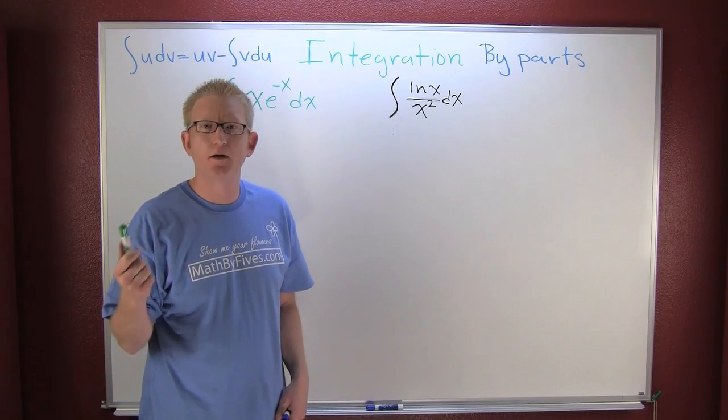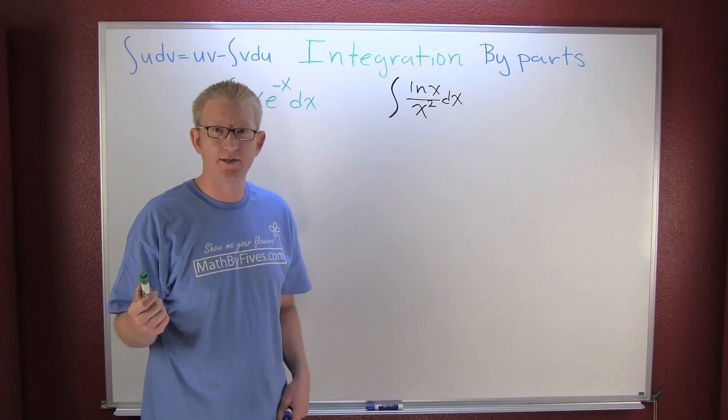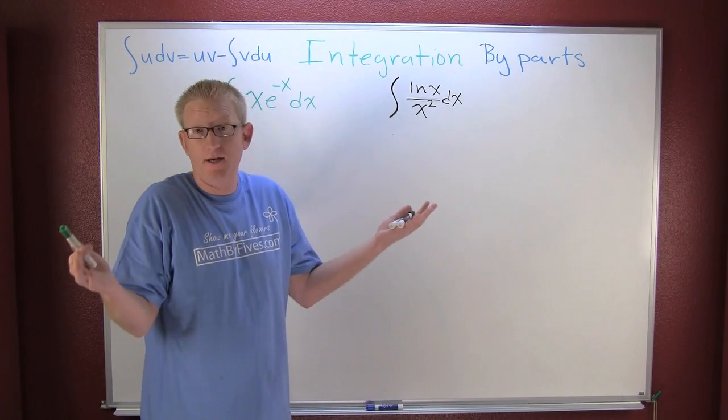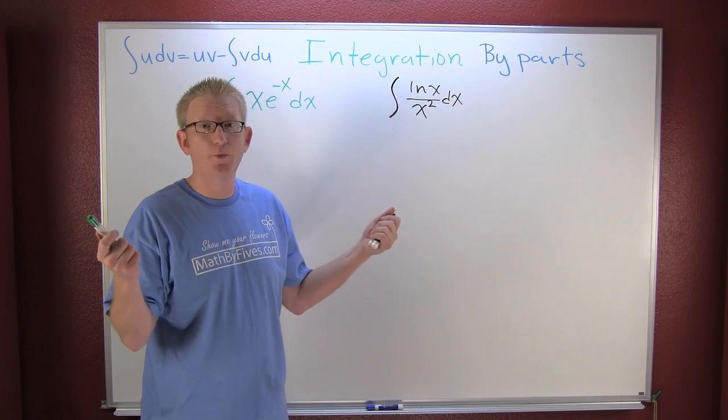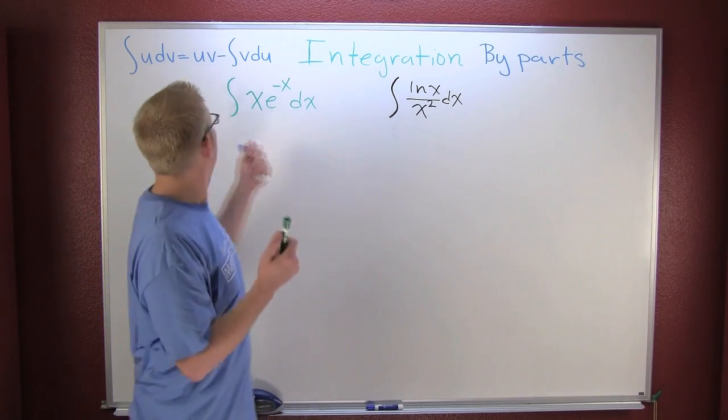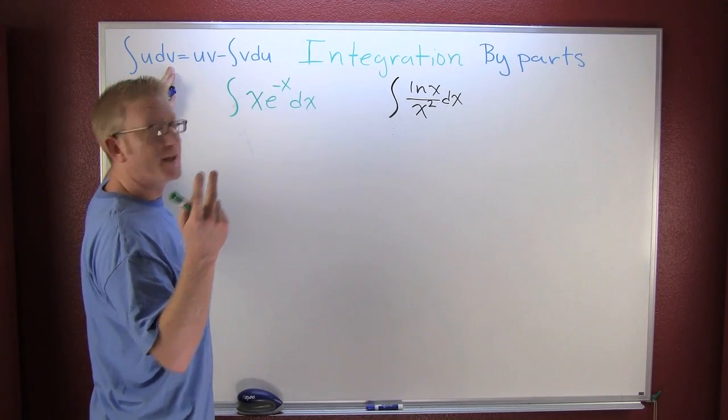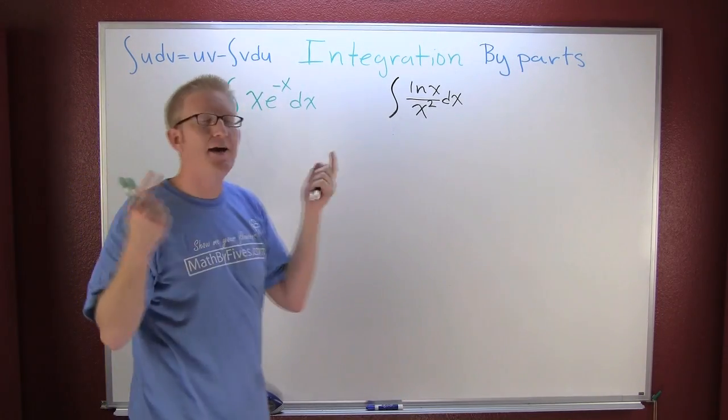The next place you're probably going to go when you're doing your integration is integration by parts. It's a lovely method. What we're doing is we're looking for a u and a dv in a particular function that we can't necessarily do u-substitution on.